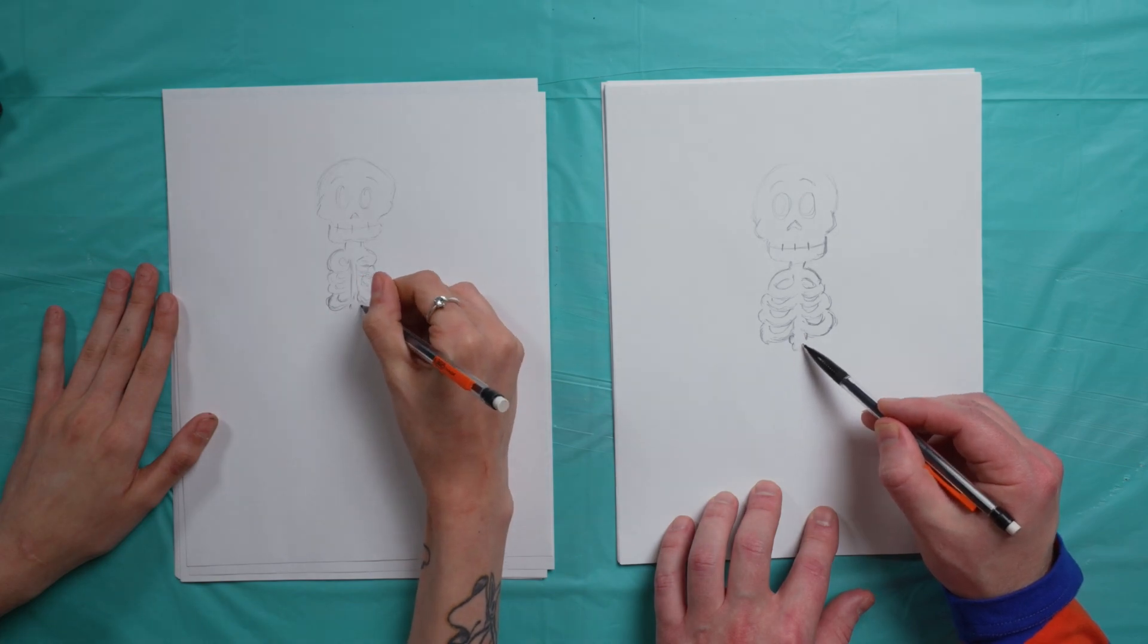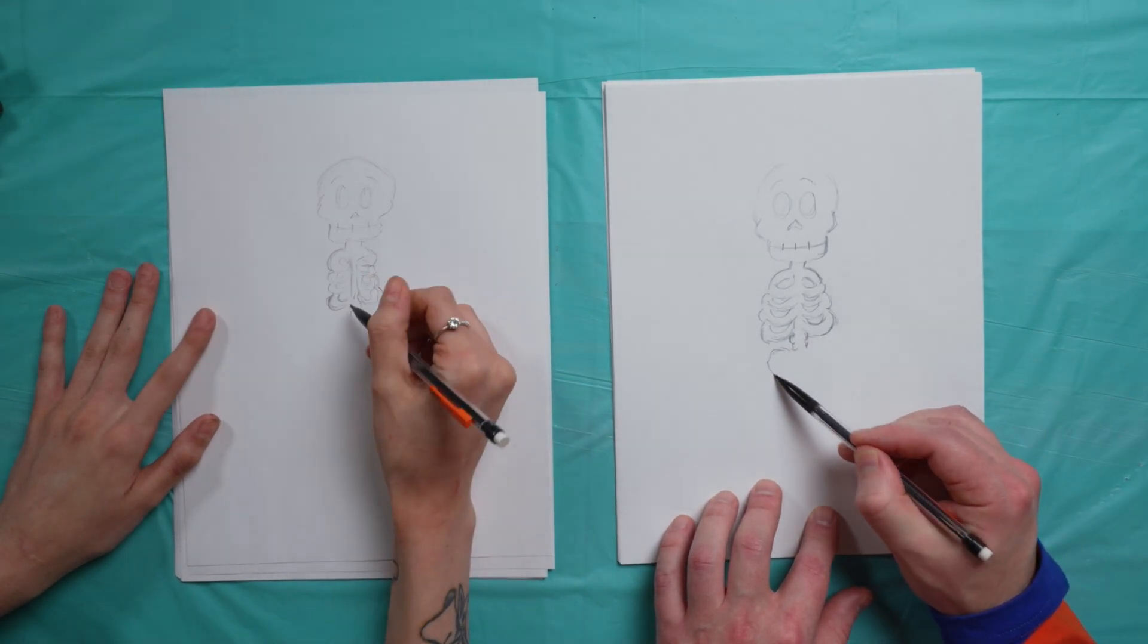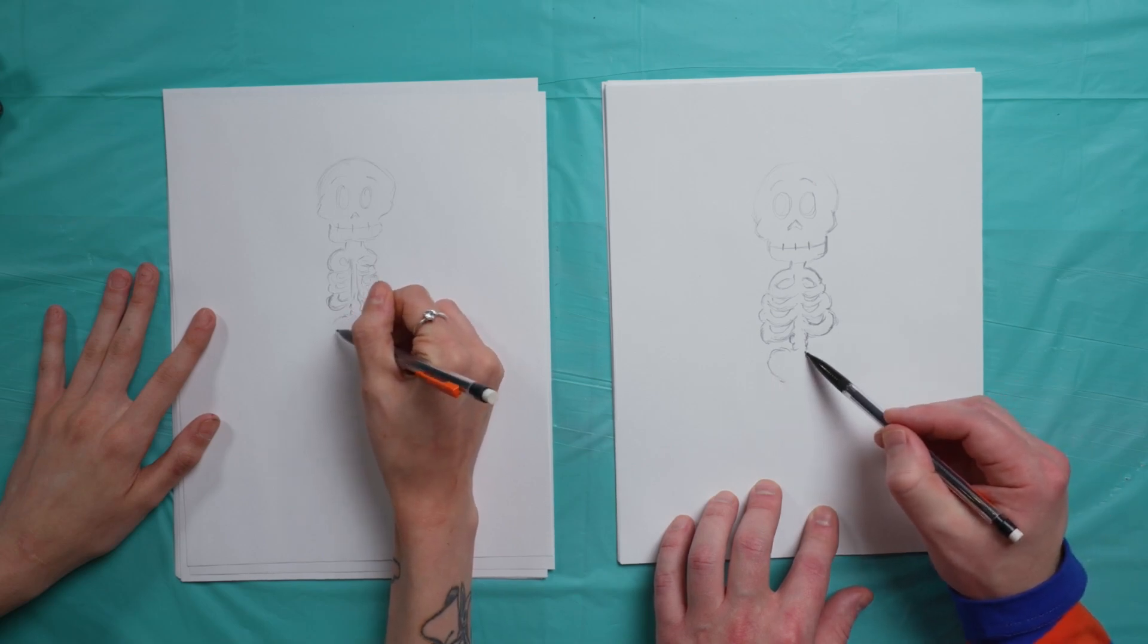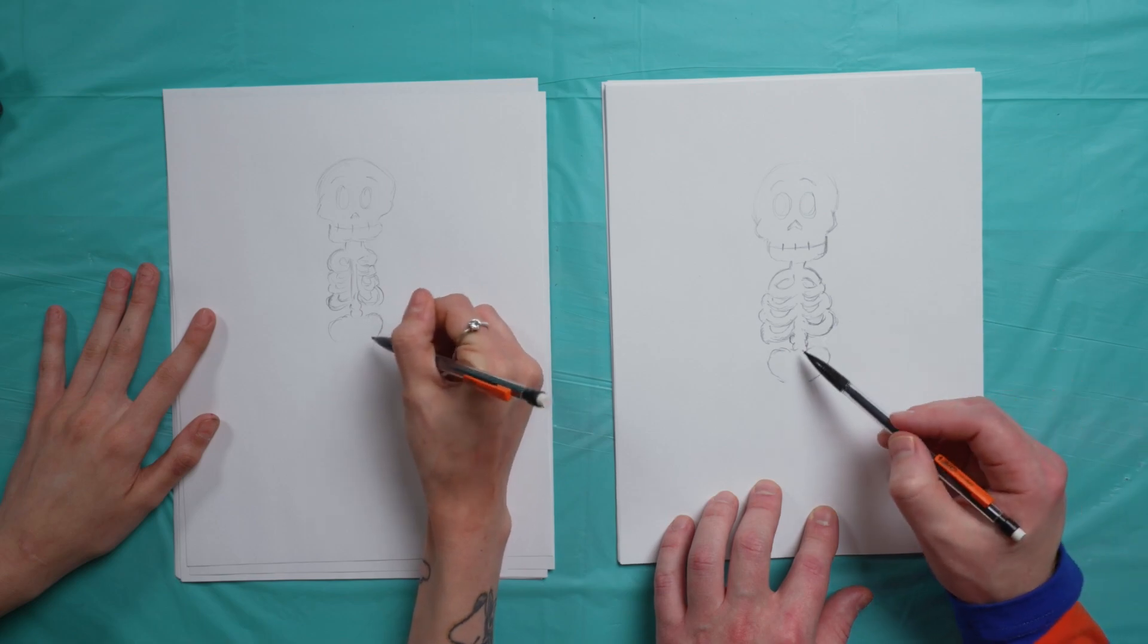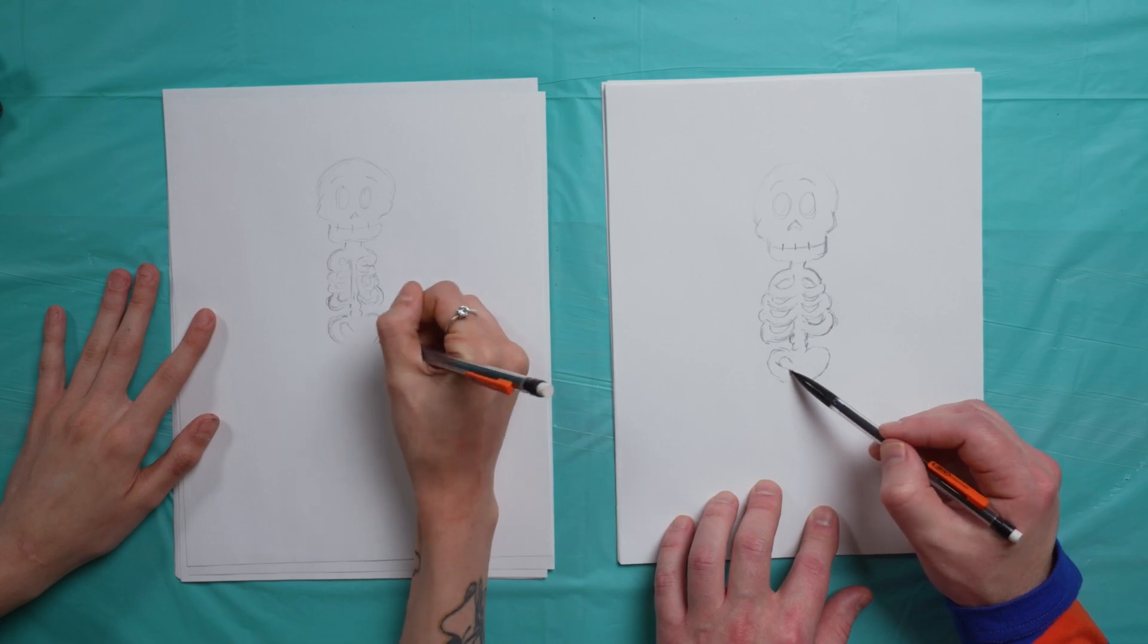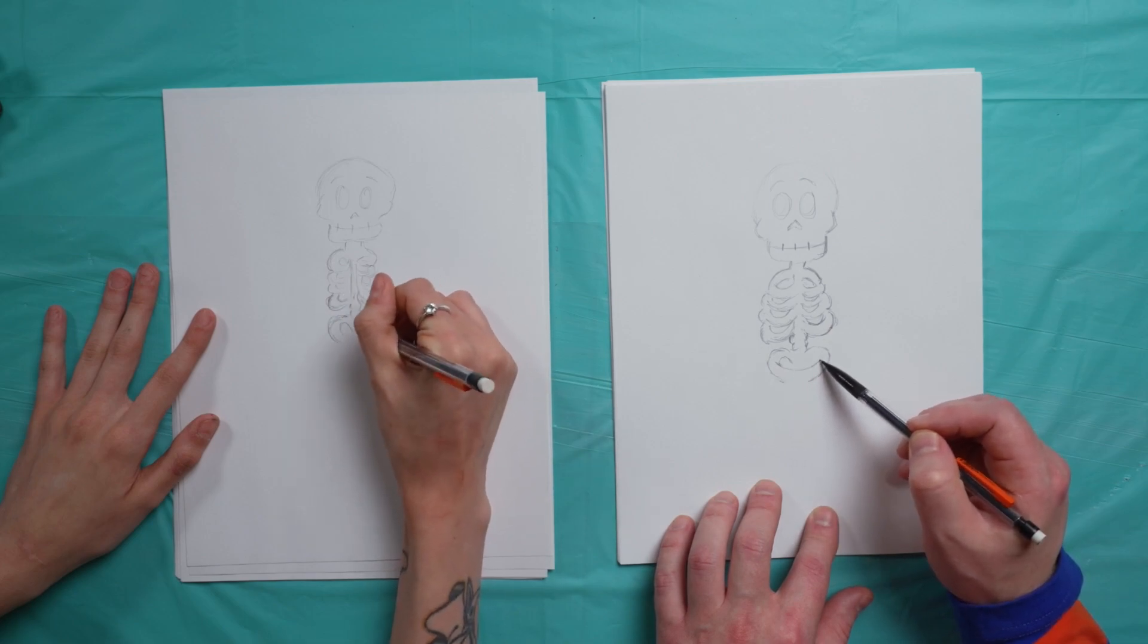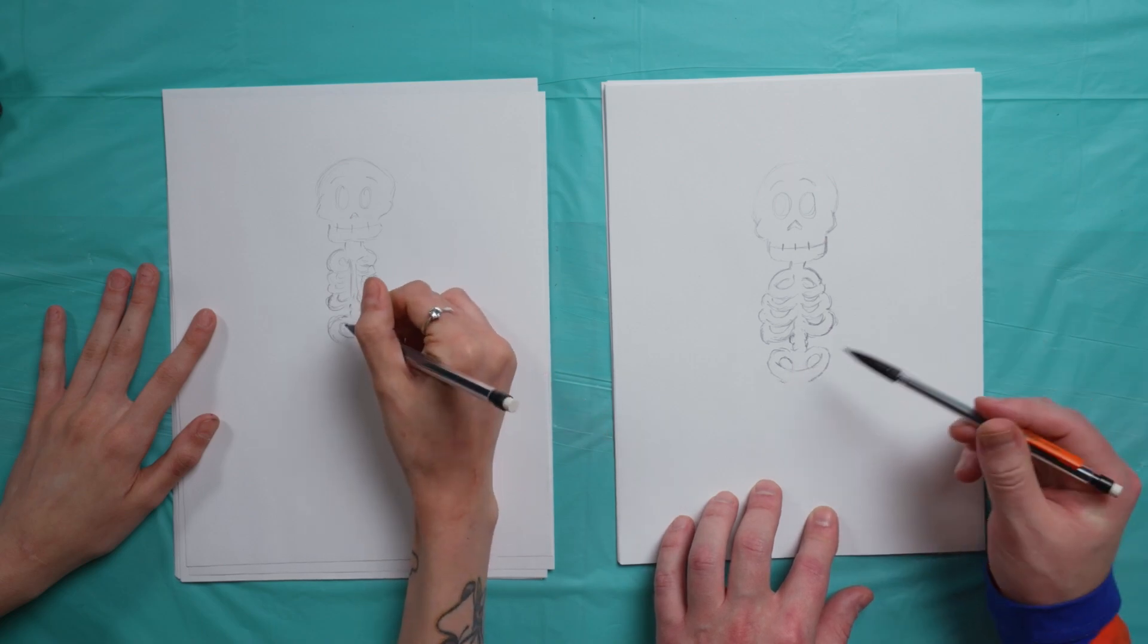So let's move down. We'll finish out the bottom of the spine and then this side too. The hips. We'll draw these little circles, the line.